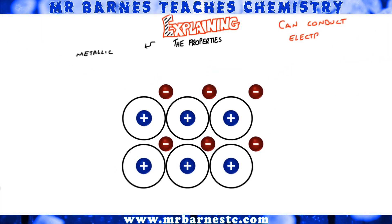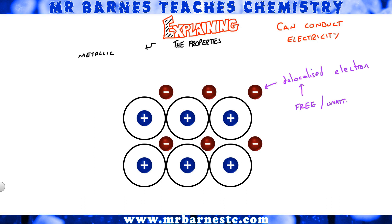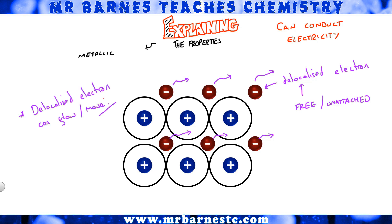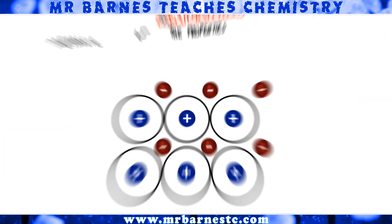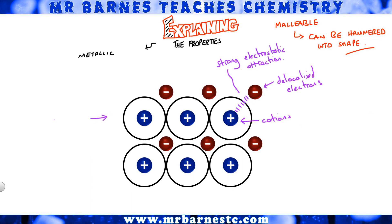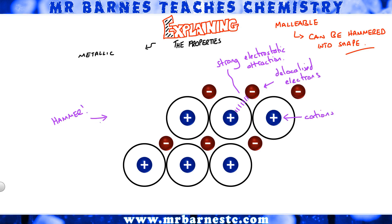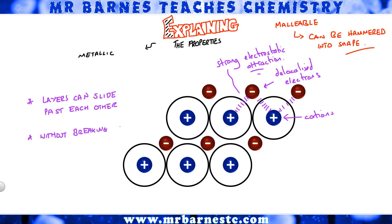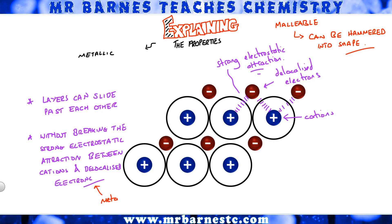Metals conduct electricity because those delocalized electrons can flow — they're free to move. Why are metals malleable? The layers can slide past each other when you hammer a metal, but this doesn't break the strong electrostatic attraction because the electrons move with it. So the layers slide past each other without breaking the strong electrostatic attraction between the cation and delocalized electrons — the metallic bond.